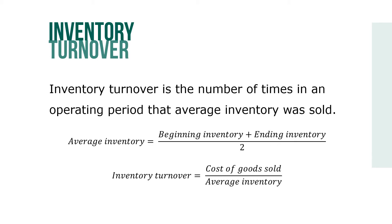Inventory turnover is the number of times an operating period that an average inventory was sold. Average inventory equals beginning inventory plus ending inventory over 2, where inventory turnover equals cost of goods sold over average inventory.